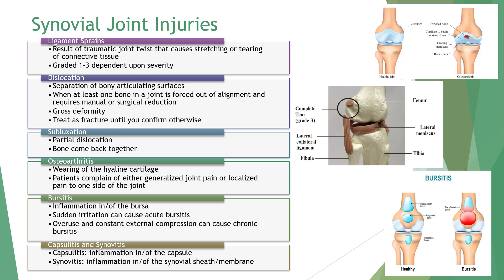Osteoarthritis is the wearing away of hyaline cartilage, with changes in joint mechanics leading to joint degeneration. It commonly affects weight-bearing joints but can also impact the shoulders and cervical spine. Symptoms include pain from friction, stiffness, prominent morning pain, localized tenderness, creaking, and grating sensations.